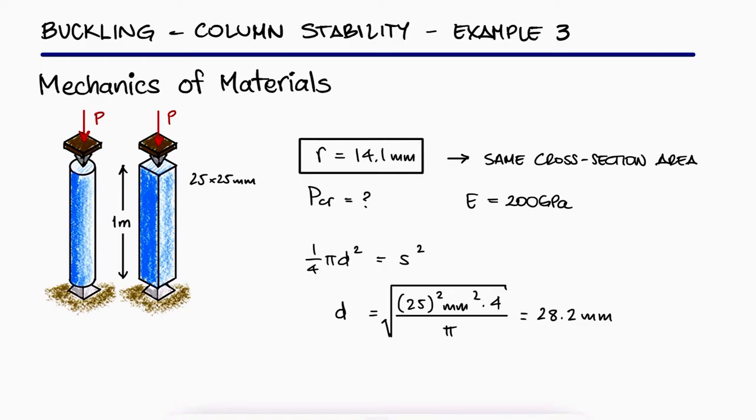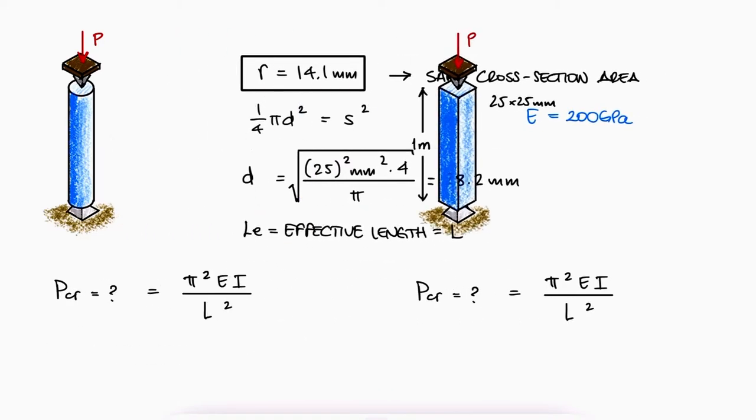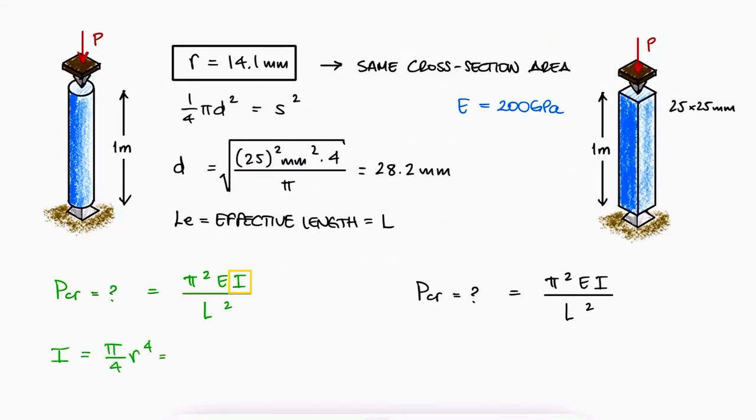The critical load will be given by Euler's formula we derived in the main video, where the effective length is just the length for both cases since these are pinned-pinned columns. This means that the only variable we need to calculate is the second moment of area for a circular cross-section in the first case and for a square cross-section in the second case.